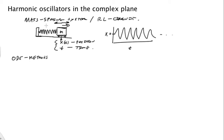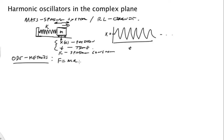The other thing we need is a spring constant k. With our ODE methods, we start from F = ma. The force on this mass is proportional to the position of the mass — it's going to be negative kx.